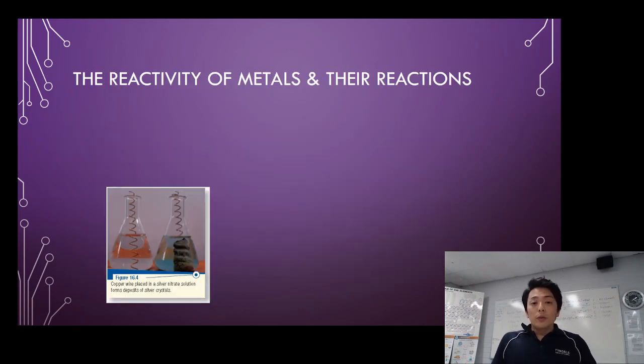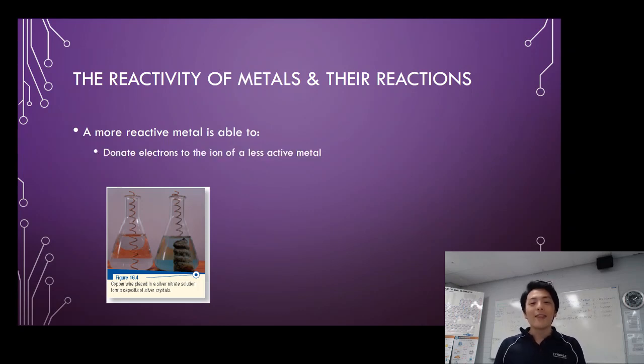Okay, now moving on to how we can categorize some of the reactions as displacement. More reactive metals are able to donate electrons to ions of a less reactive metal, and it will be observed as displacement reaction.